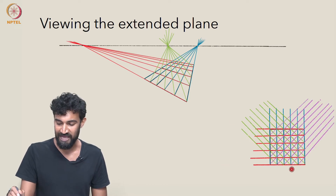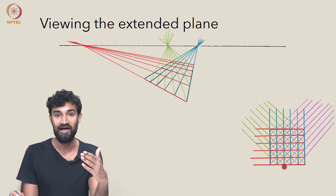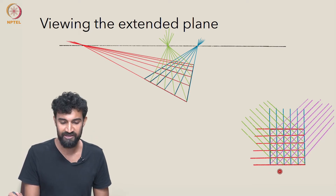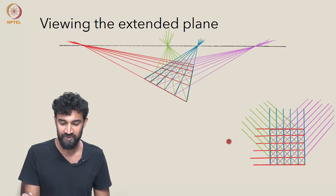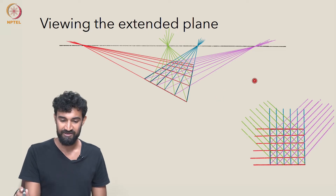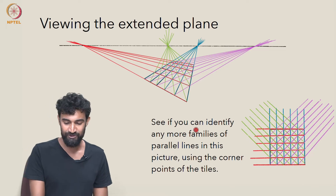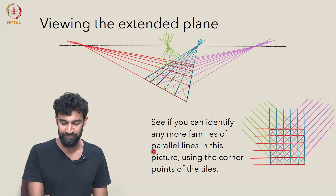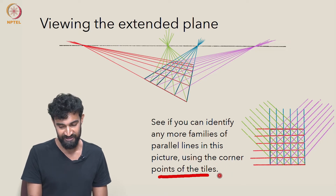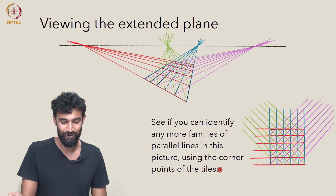There's another family of diagonals — the other diagonals, another family of parallel lines. The purple lines give us yet another point at infinity. So that's four points. As a little exercise, see if you can identify any more families of parallel lines in this picture using the corner points of the tiles — there are of course many, many more. Can you identify any yourself?